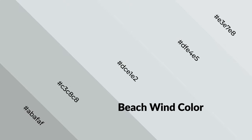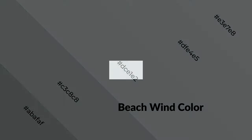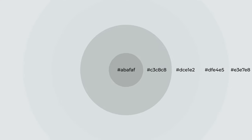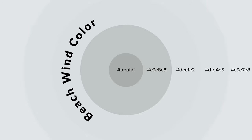Cool colors are like water, ice, sky, grass, soft, and snow. You can see them used in baby products.